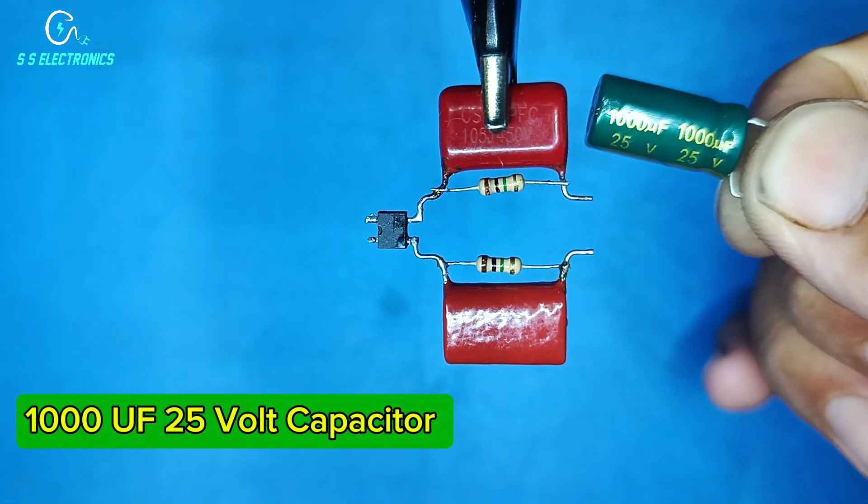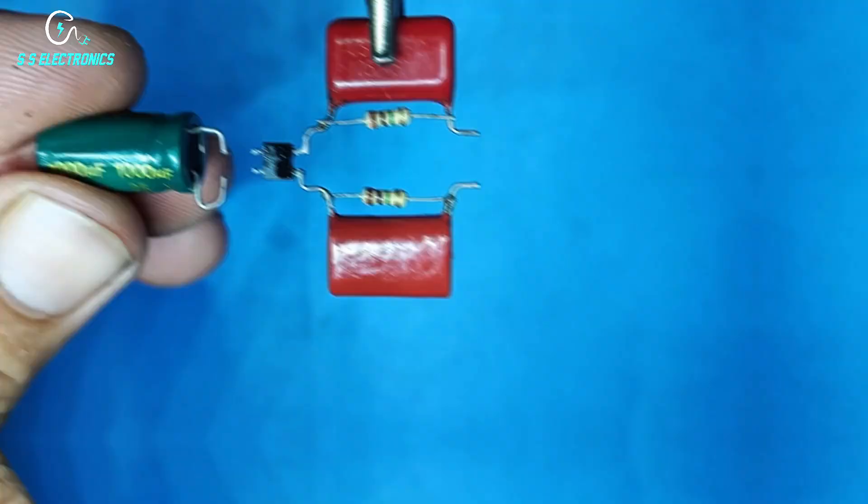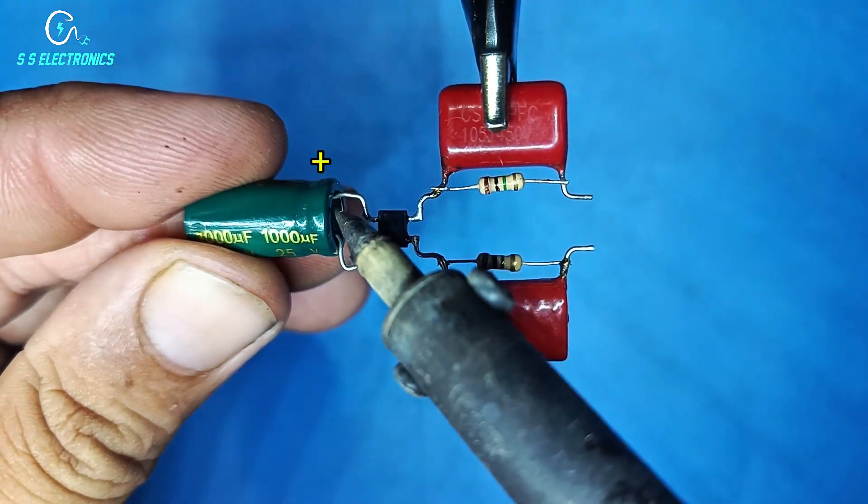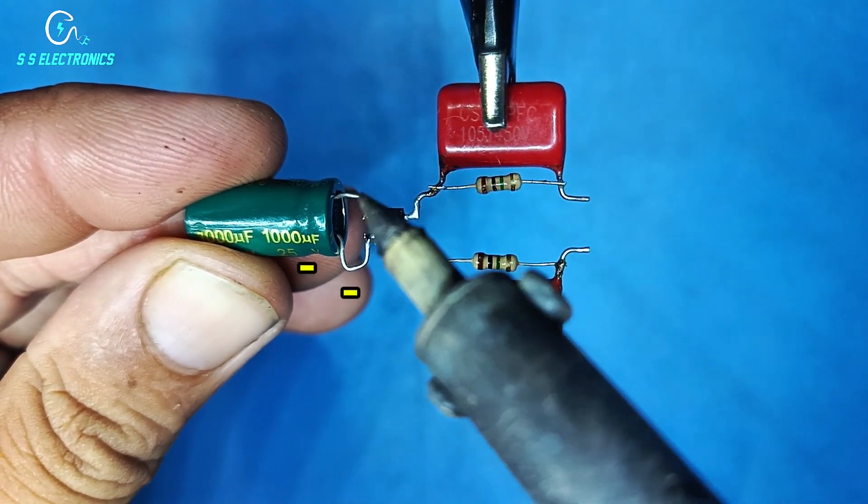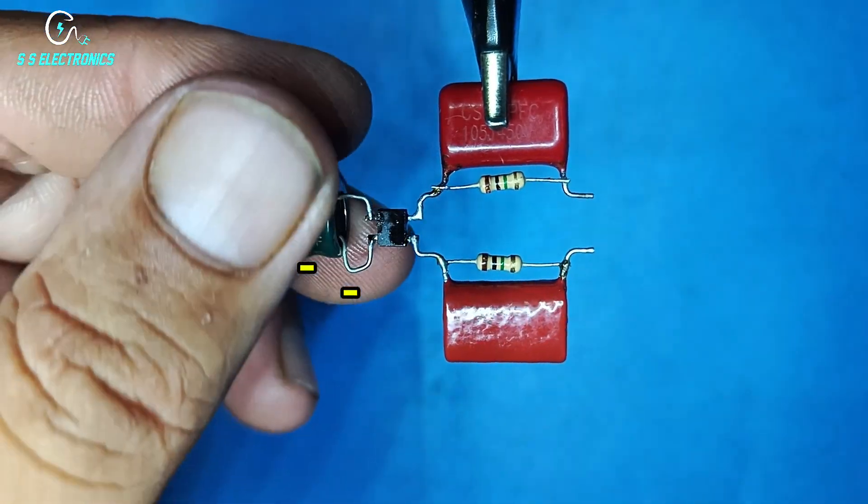1000UF 25V capacitor. Capacitor positive side connecting with IC positive side. Capacitor negative side connecting with IC negative side.